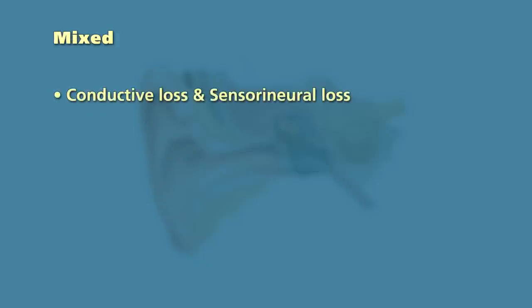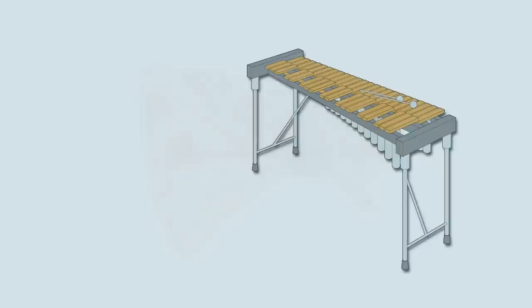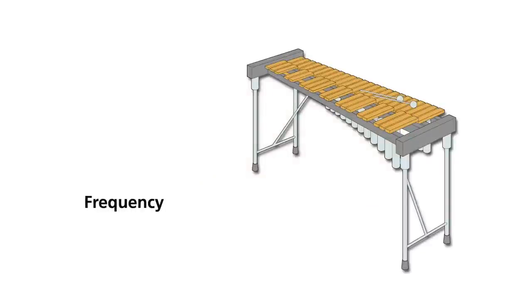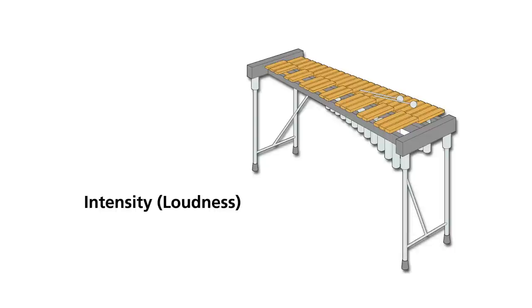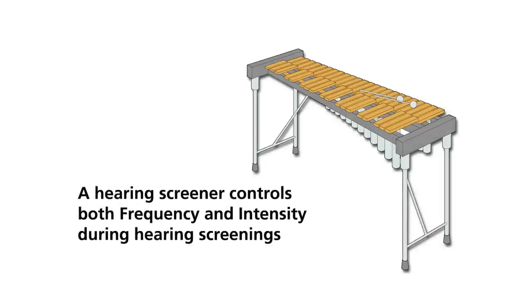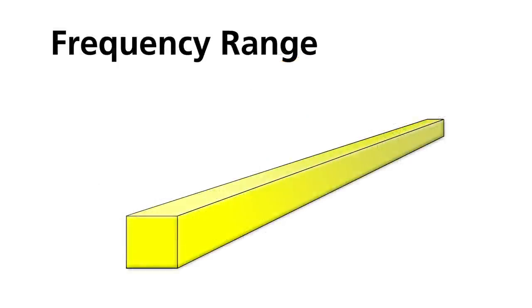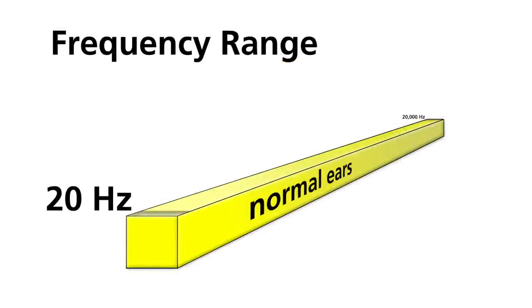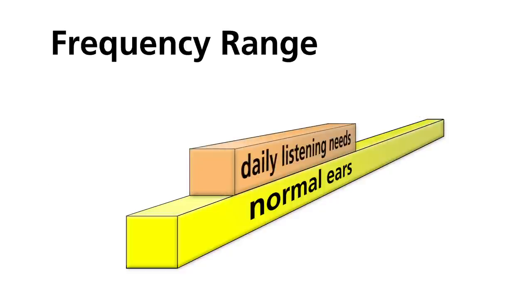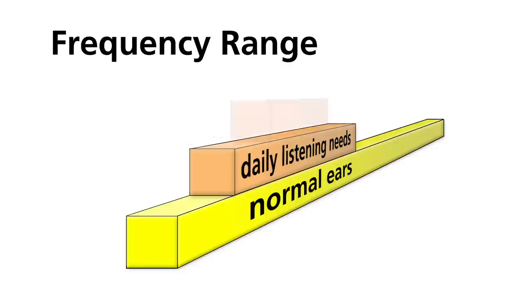A mixed hearing loss includes both a conductive and sensorineural hearing loss. Two important characteristics of sound are frequency, which we perceive as pitch, and intensity, which we perceive as loudness. A hearing screener needs to control both frequency and intensity during hearing screening. The frequency range for normal ears is 20 to 20,000 cycles per second, or hertz. The range of sounds for our daily listening needs is limited to a smaller frequency range — specifically, frequencies of 500, 1,000, 2,000, and 4,000 hertz are critical for hearing and understanding speech sounds. A child with a hearing loss in this frequency range has a distinct disadvantage compared with children who have normal hearing.